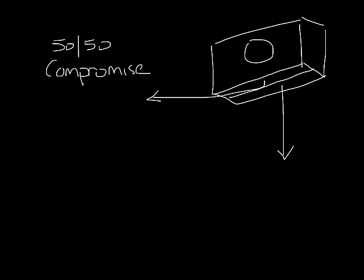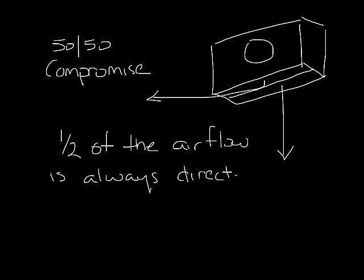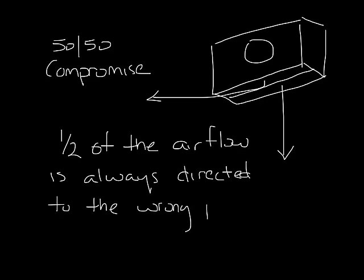So the most common solution is actually a compromise where you set one slot of the diffuser to throw across the ceiling and one slot to throw down the glass. This way you have half the air going where it needs to go at all times. We call this the 50-50 compromise. The problem is that you also have half the air going to the wrong place at all times.